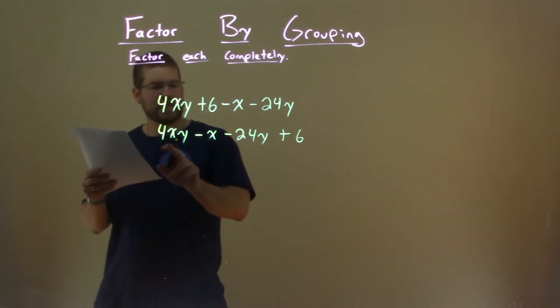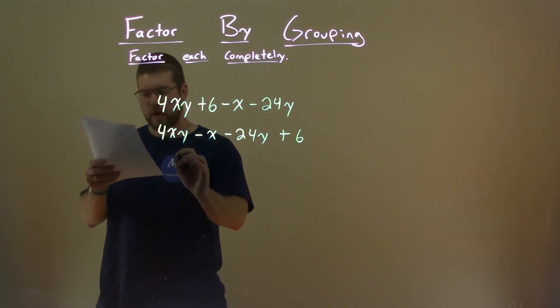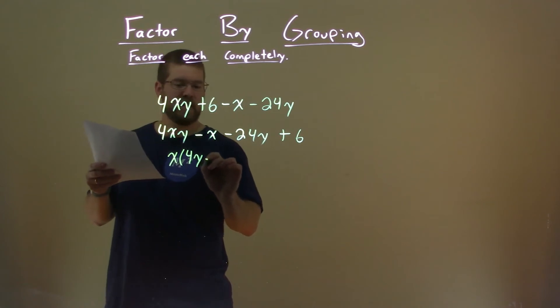Well, from here, I see my like terms I can pull out, which is an x. X is in both of these, so I'm going to pull out an x. What am I left with? Well, it's a 4y, and then minus a 1.